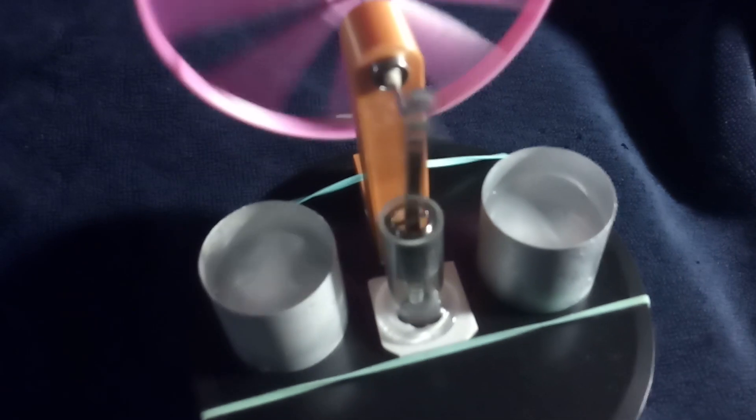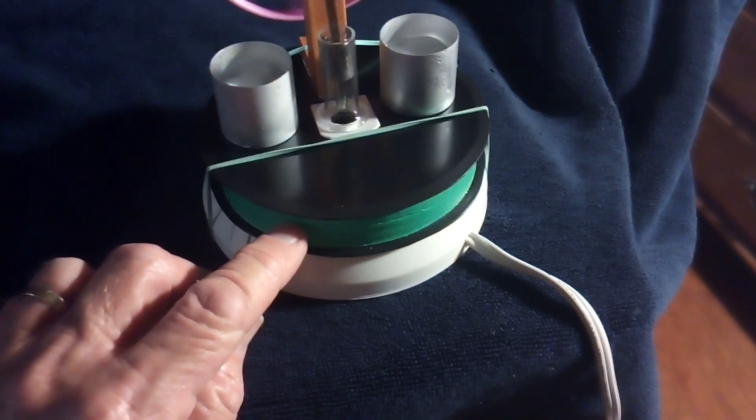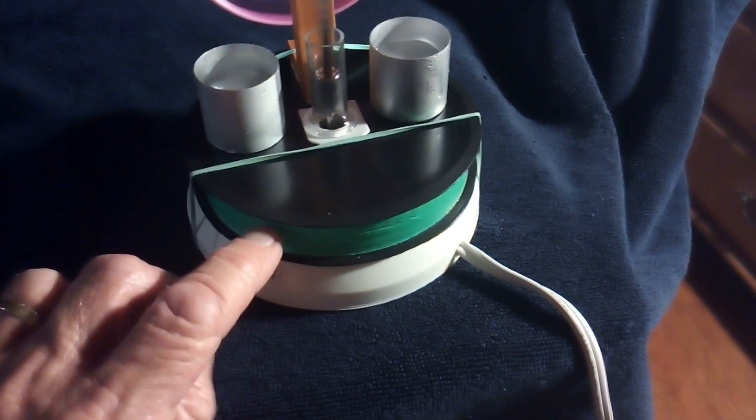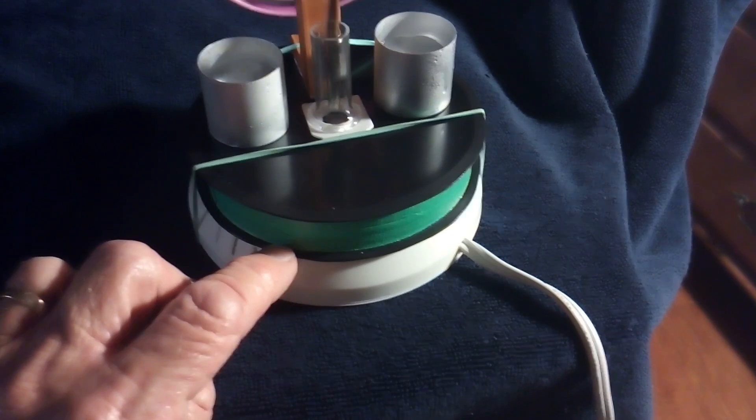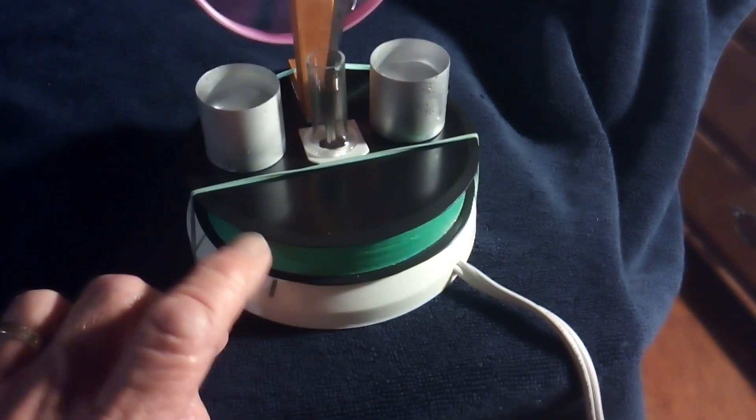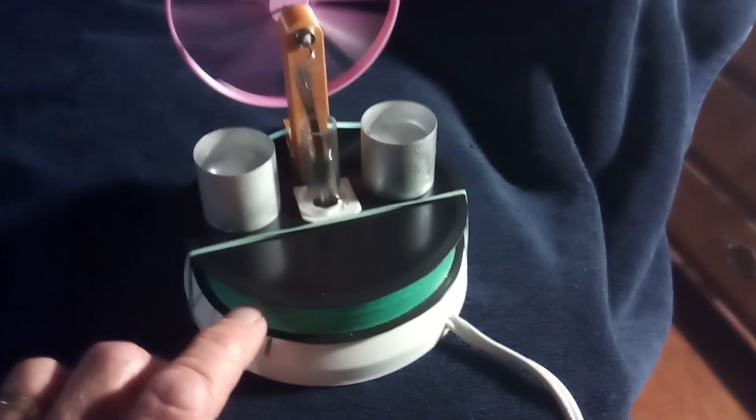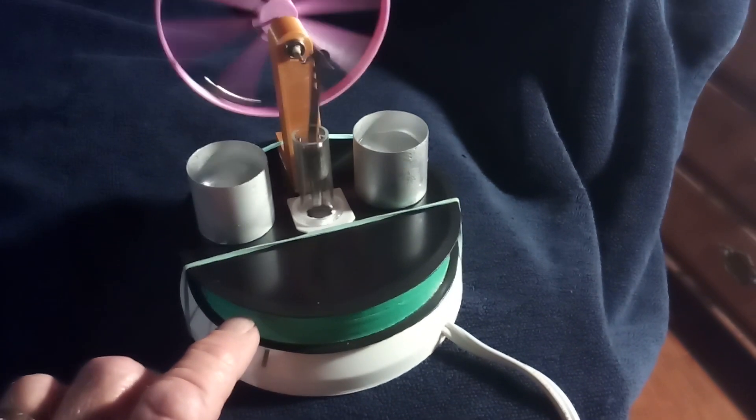I think what I might do - this is a PLA spacer here and I may print another one and then glue it permanently to the bottom, and then figure out a way to tape the top onto that so that I can take it apart because I don't like the fact I can't take it apart.